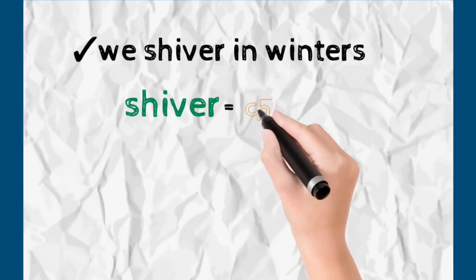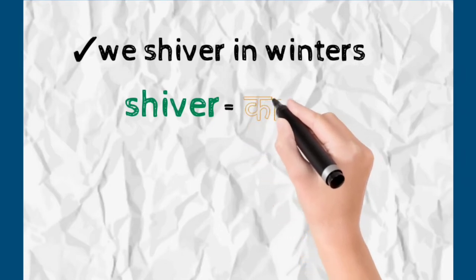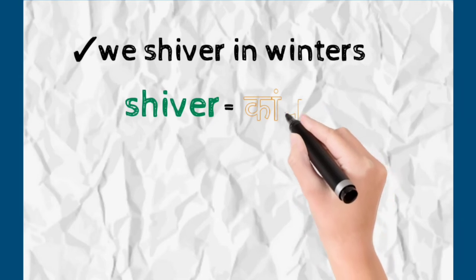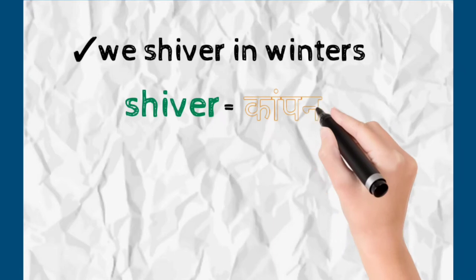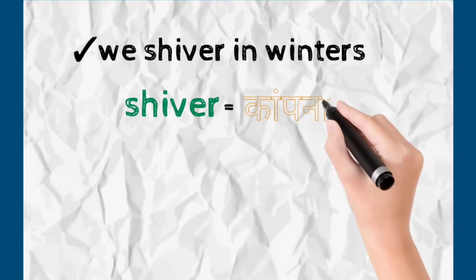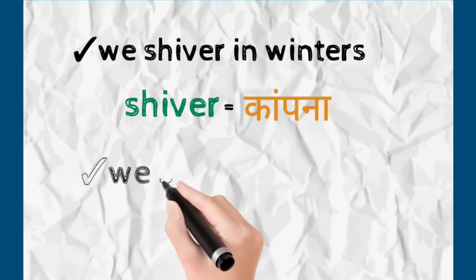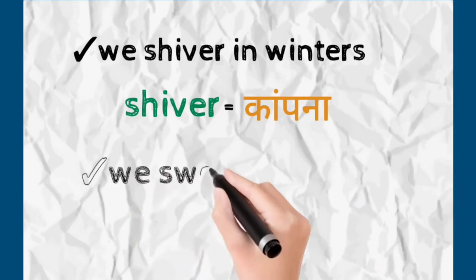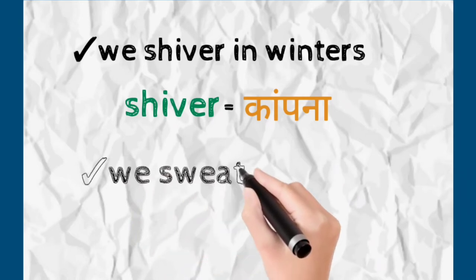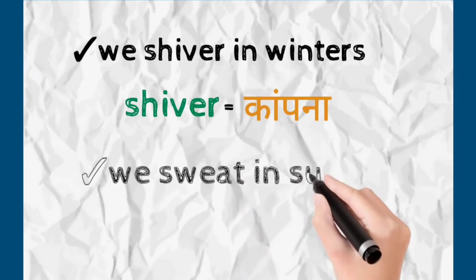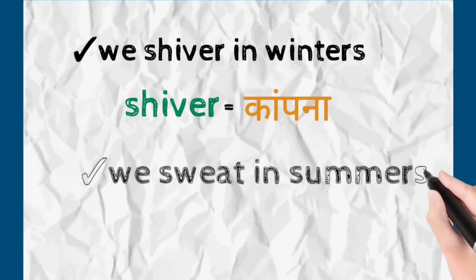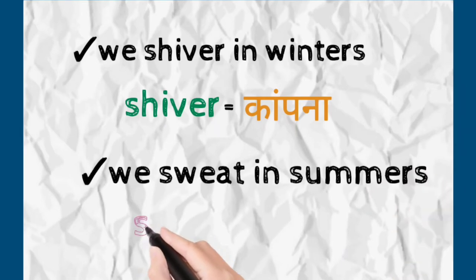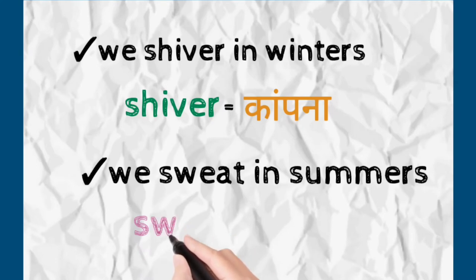So, we sweat in summers. Today our topic of interest is: why do we shiver in winters — ऐसा क्या होता है हमारी body में कि हमें winters में कपकपी छूटती है — and why do we sweat in summers, or how does environmental variation affect whether we shiver or sweat. Today we will be discussing all these concepts, which are based on the term homeostasis.